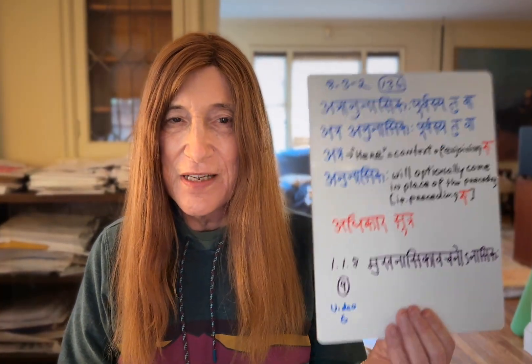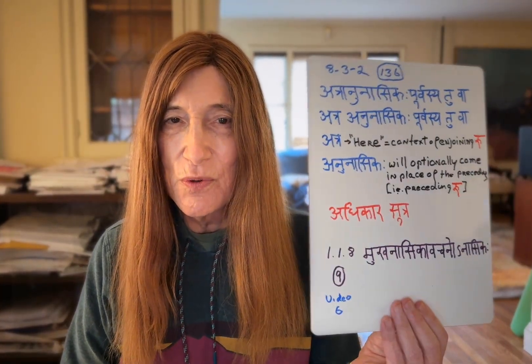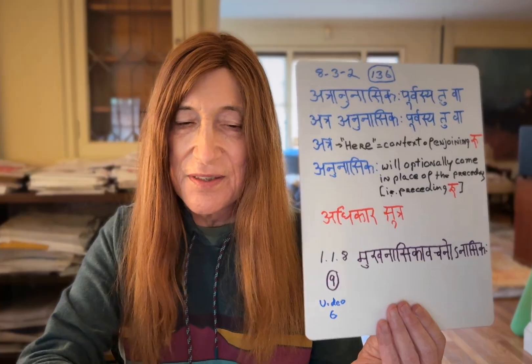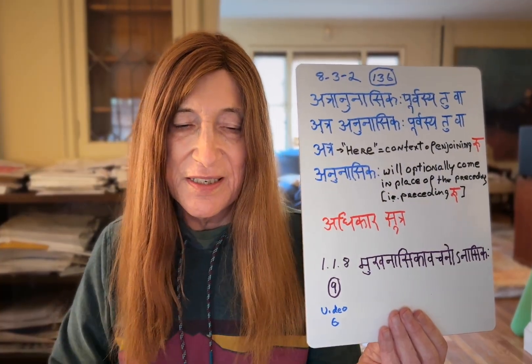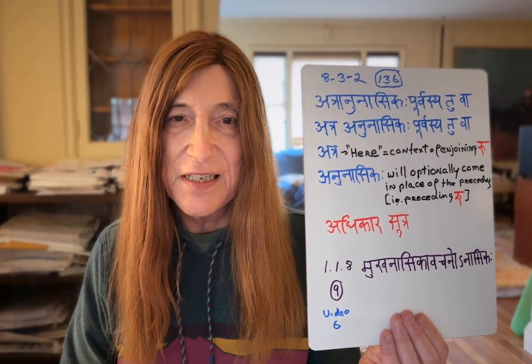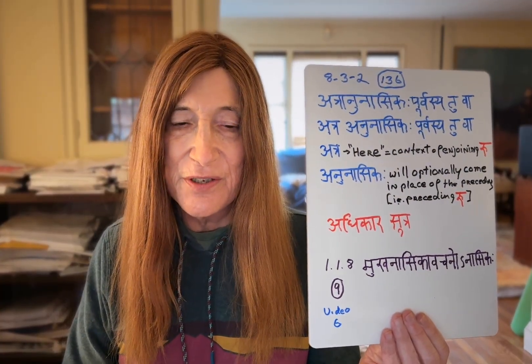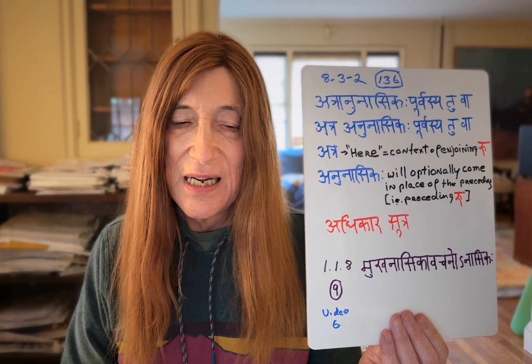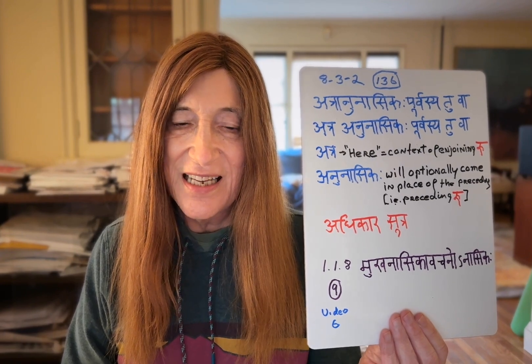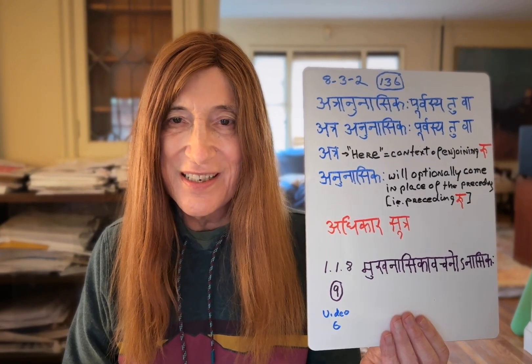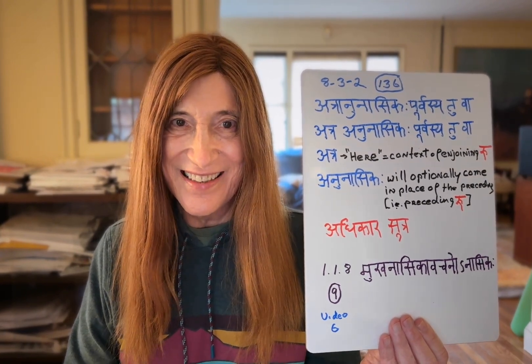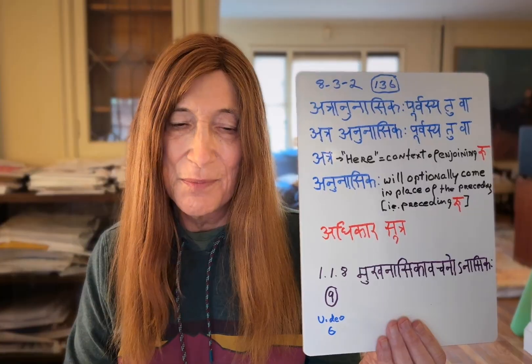So 'atra' being the topic of enjoining ru, the sutra itself is 8.3.2 in Ashtadhyayi and number 136 in Siddhanta Kaumudi.